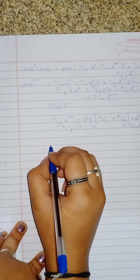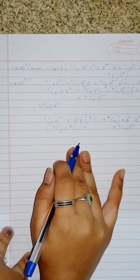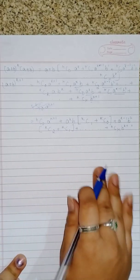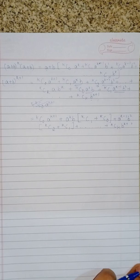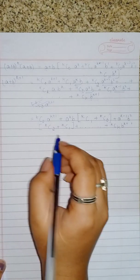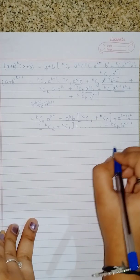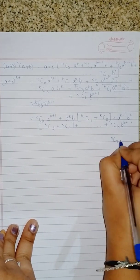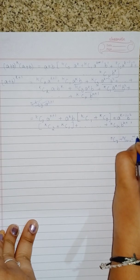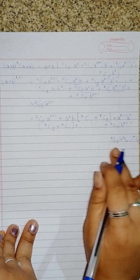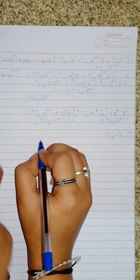The important formula we learned in combinations — which I have also put in a separate video linked in the description — is: nCr + nCr-1 = (n+1)Cr. The three-mark derivation we learned was: nCr + nCr-1 = (n+1)Cr. We are going to use this formula here.